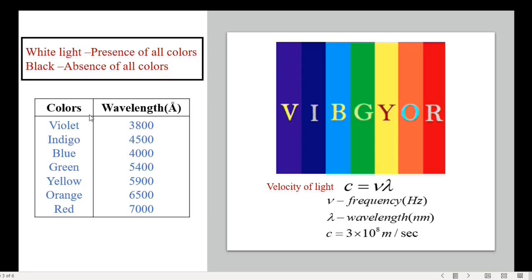For example, for violet it is 3800 angstroms, indigo it is 4500 angstroms, and for red it is 7000 angstroms. The velocity of light is denoted with c, where c equals nu times lambda, with nu being the frequency and lambda being the wavelength.